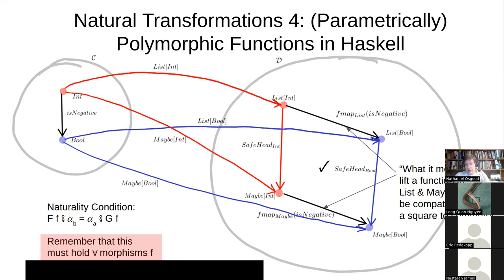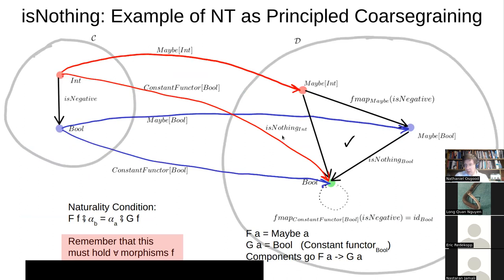In Haskell, any parametrically polymorphic function — safe_head, maybe-to-list, is_nothing — is guaranteed to be a natural transformation. This means that in functional languages, opportunities for optimization abound. If you can identify the category-theoretic foundations, any parametrically polymorphic function is guaranteed to be natural, opening up a huge variety of optimizations.